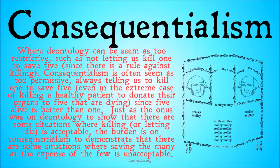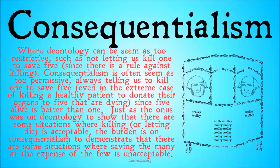Where deontology can be seen as too restrictive — such as not letting us kill one to save five, with a trolley running down the tracks out of control, since there is a rule against killing — consequentialism, on the other hand, is often seen as too permissive, always telling us to kill one to save five, even in extreme cases such as killing a healthy patient to donate their organs to five that are dying, since five alive is better than one and we're just looking for the best consequences.